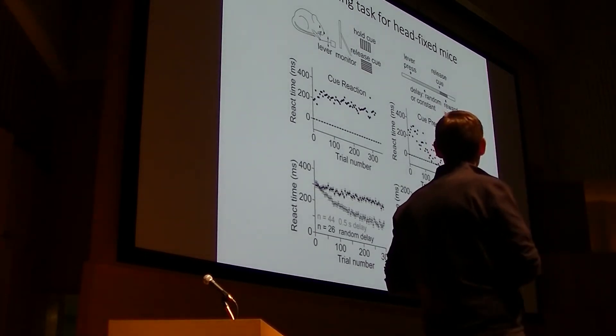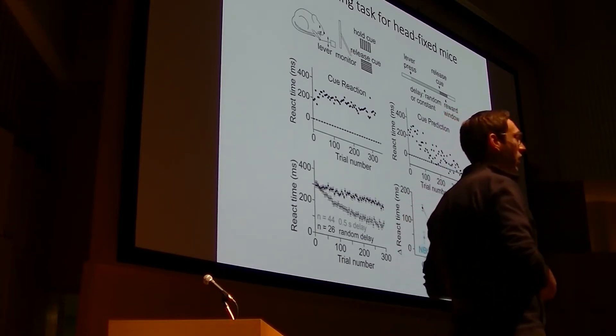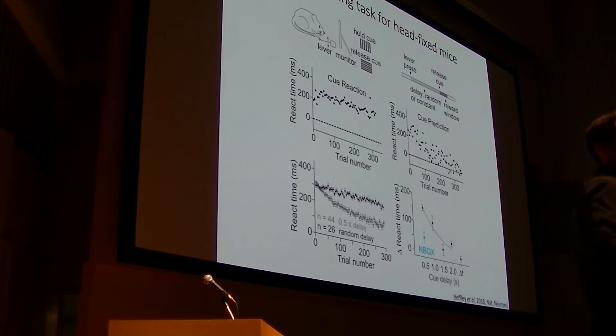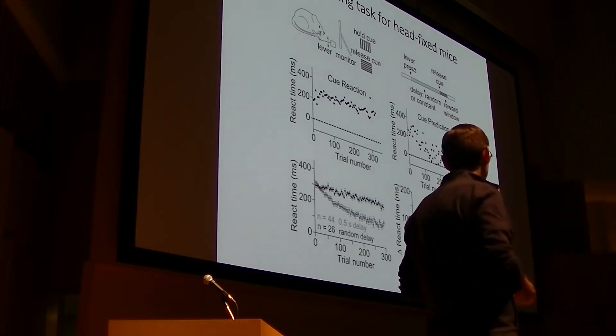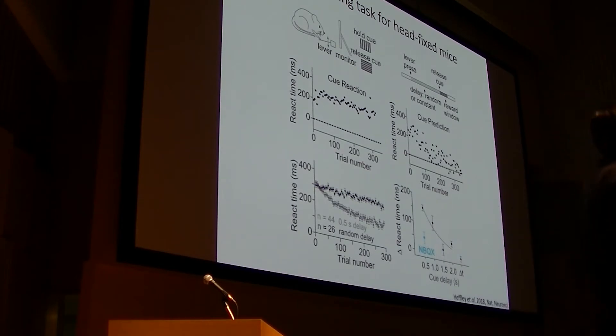Notably, animals learn well in this paradigm when the cue delay is short. And by short, I mean a few hundred milliseconds. They learn poorly when the cue delay is longer, greater than a second. If you're at all familiar with other cerebellar-dependent learning paradigms, this sort of learning curve should look familiar. And for example, in conditioned eyeblink experiments, you see the same temporal dependence of learning. It tends to be a hallmark of cerebellar sensorimotor associations, which gives us some confidence, I think, that the cerebellum might be involved in this task.